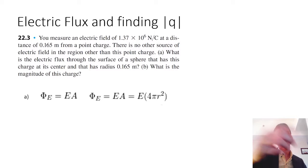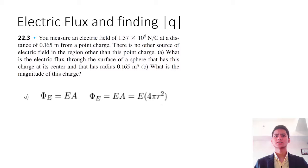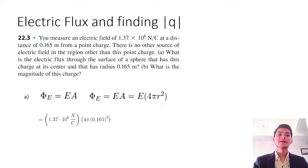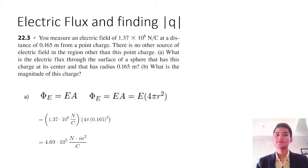Previously we considered a plane; now we are considering a sphere, so what changes is the value of area A. Previously we used the area of a plane; now we use the area of a sphere, which is 4 pi r squared. So flux equals the electric field multiplied by the area of the surface of that sphere, giving us 4.69 times 10 to the 5th newton meters squared per coulomb.